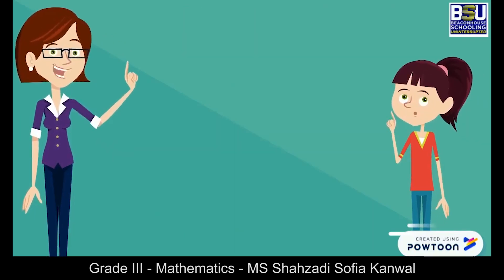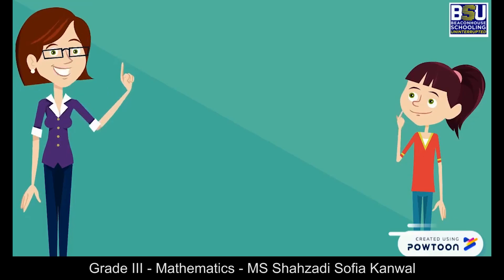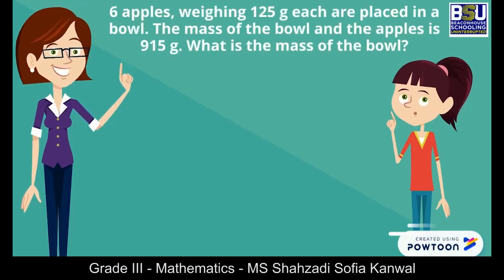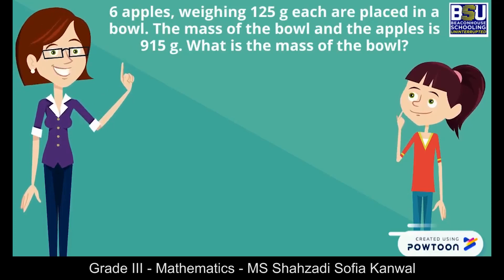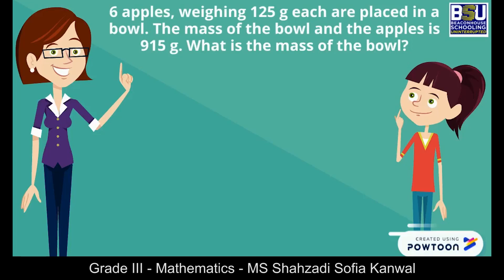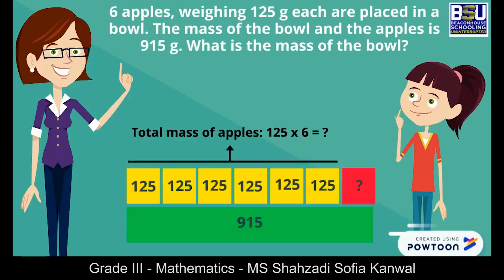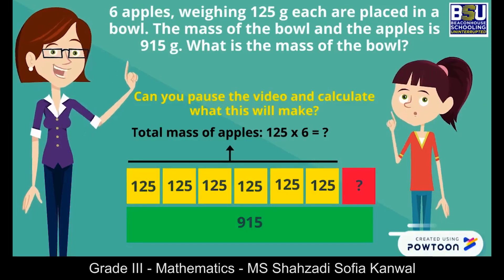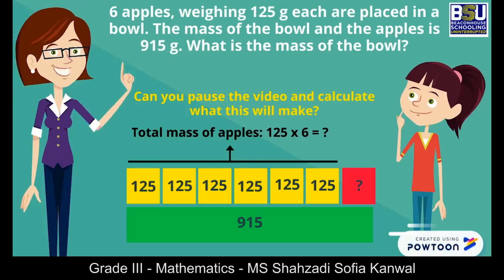Now let's try another similar question using three-digit numbers. Six apples weighing 125 grams each are placed in a bowl. The mass of the bowl and the apples is 915 grams. What is the mass of the bowl? I think we first have to multiply 125 by 6 to get the mass of the apples. That's right Sara. Can you pause the video and calculate what that will make?